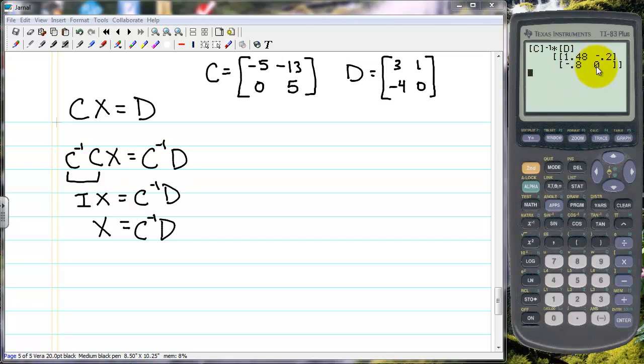Now to verify that that is the solution we would want to multiply C times that matrix and see if we get D. So let's try that. So second matrix C times, now we want to bring that matrix up, so just like with numbers we can use the second answer, so that's bringing that matrix back up, and we press enter and we get our matrix D. So this would be our solution here. We could write it over here but I'm not going to take the time to do that. We're going to look at one more example before we end.